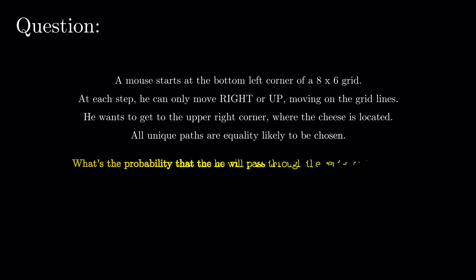All unique paths are equally likely to be chosen. What's the probability that he will pass through the center of the grid?